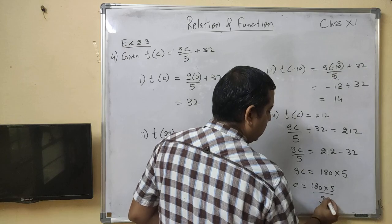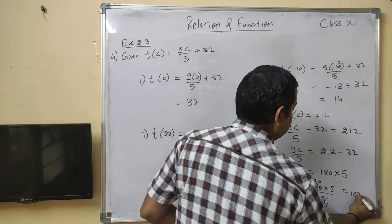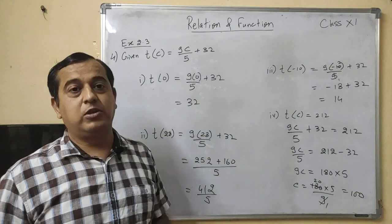This gives you C is equal to 180 into 5 upon 9. 9 into 1 is 9, 20 into 9 is 180. This is equal to 100. Means C will be 100 degree Celsius.